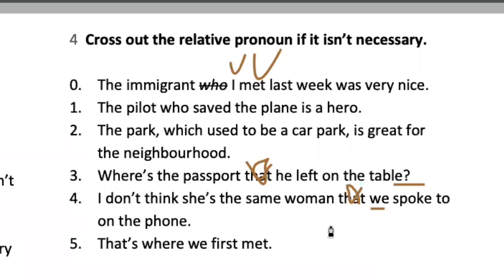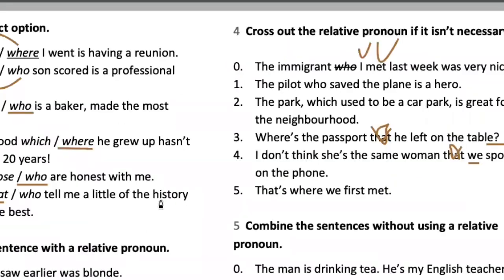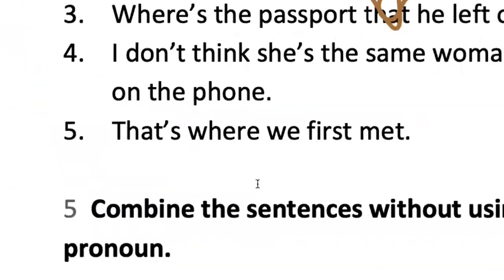Number five: 'That's where we first met.' We talk about a place. But if I omit 'where,' 'that' could be not just a place — maybe it's the occasion, the time, the day, the anniversary, or the person who introduced us. So it's important to use it. In that case, we cannot omit it.